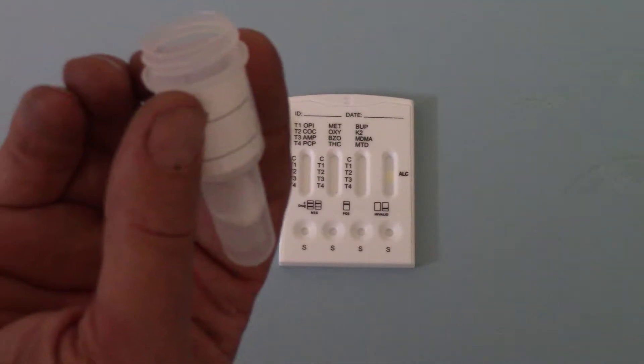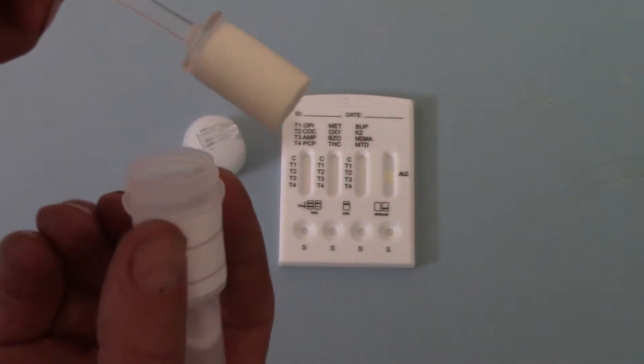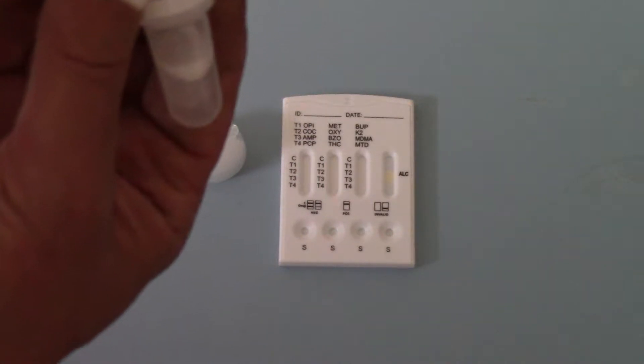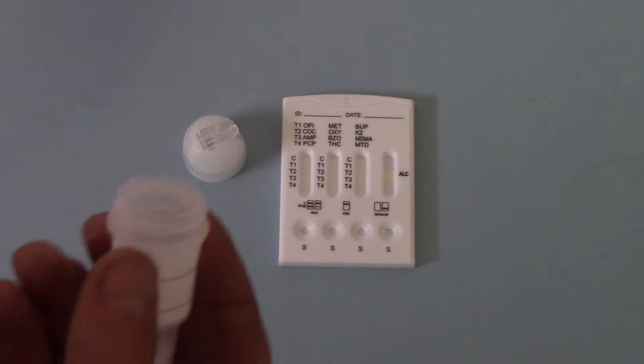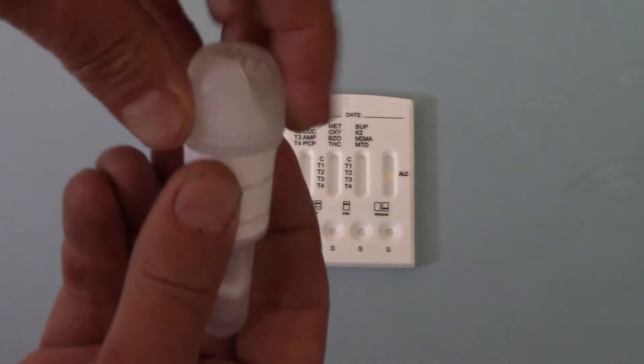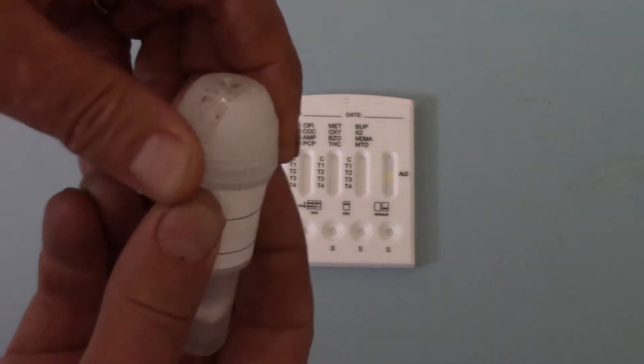These swabs don't tend to compress so if there isn't adequate saliva being obtained in the bottom of that bulb, you can ask them to put that back into the mouth and to feed saliva onto it to get an adequate sample.